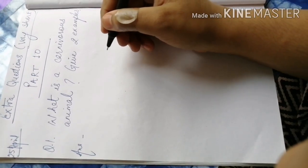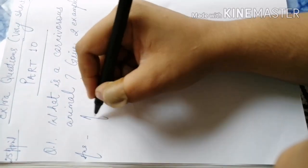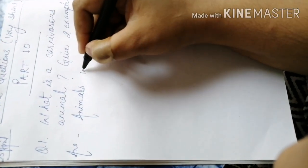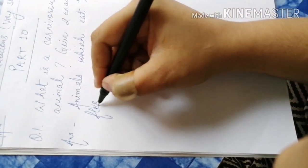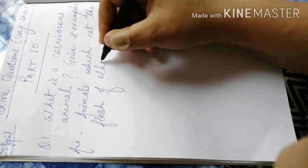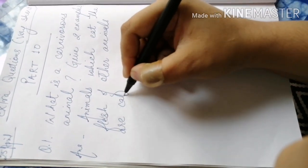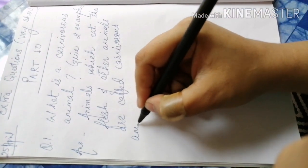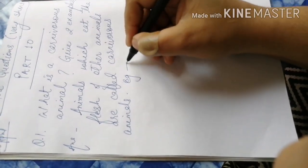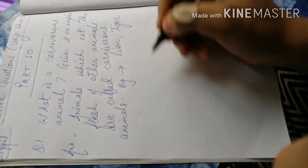Answer. Carnivorous animals are the flesh eating animals, for example, lion and tiger. Animals which eat the flesh of other animals are called carnivorous animals. Example: lion and tiger.